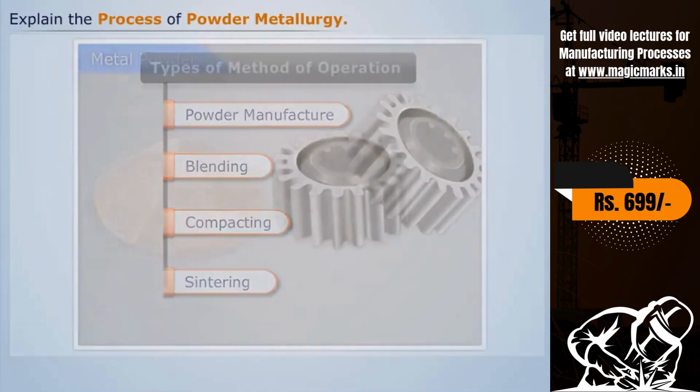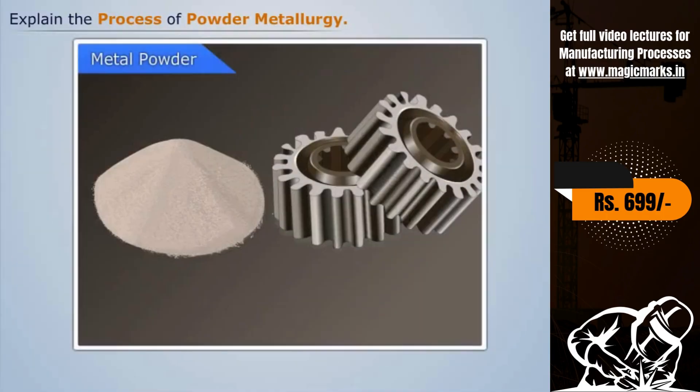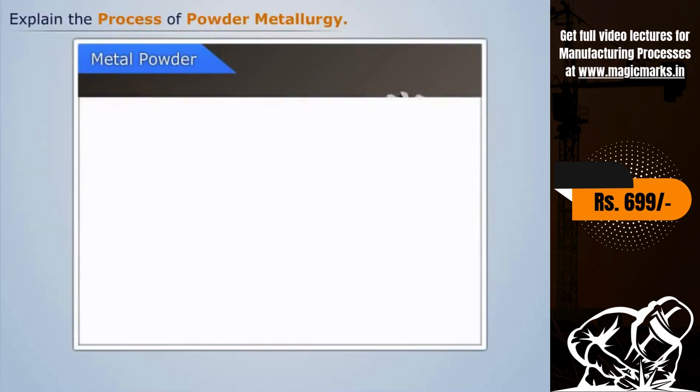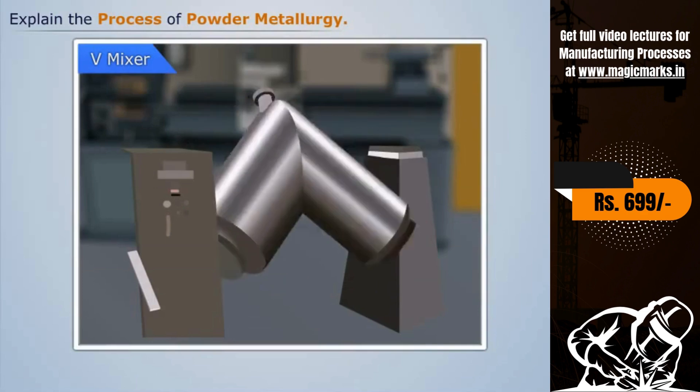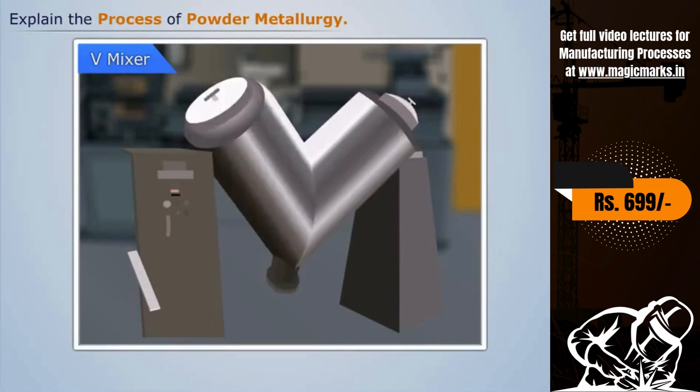In the first step, the metal powder is produced from the metal. In the second step of blending, these metal powders are mixed together.